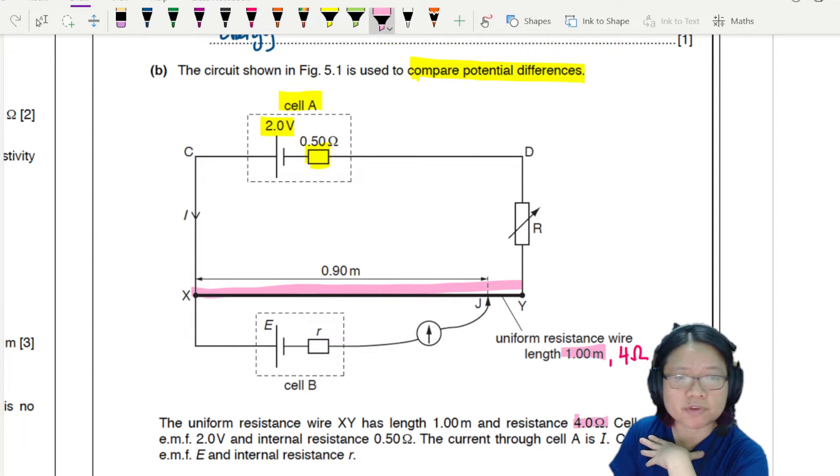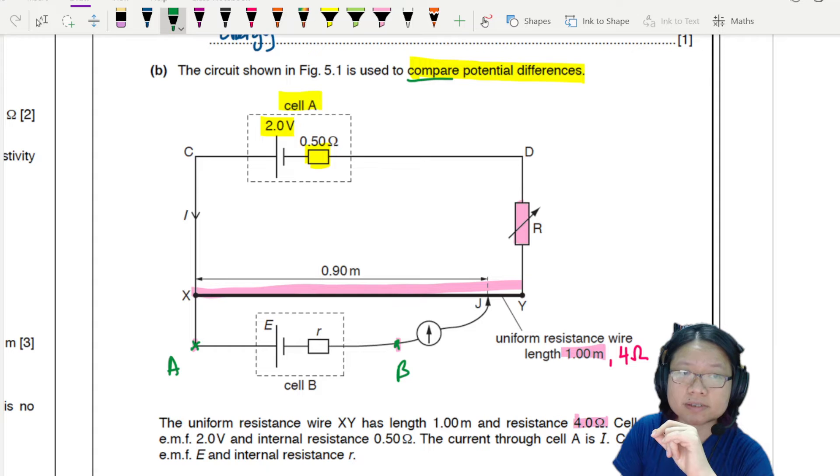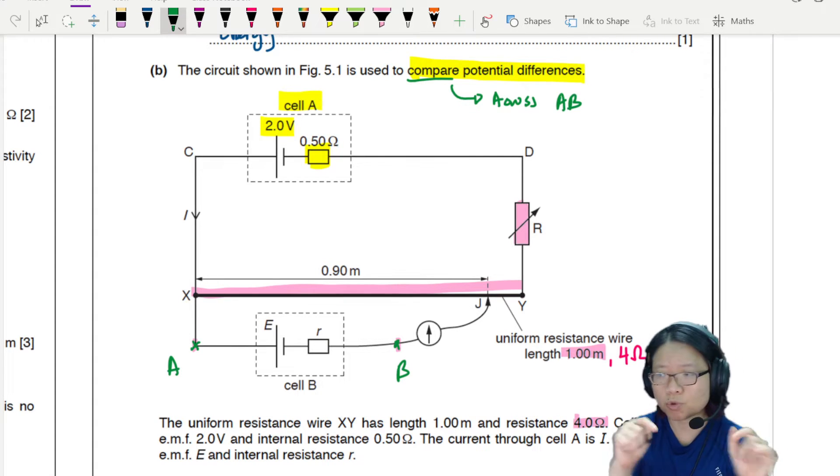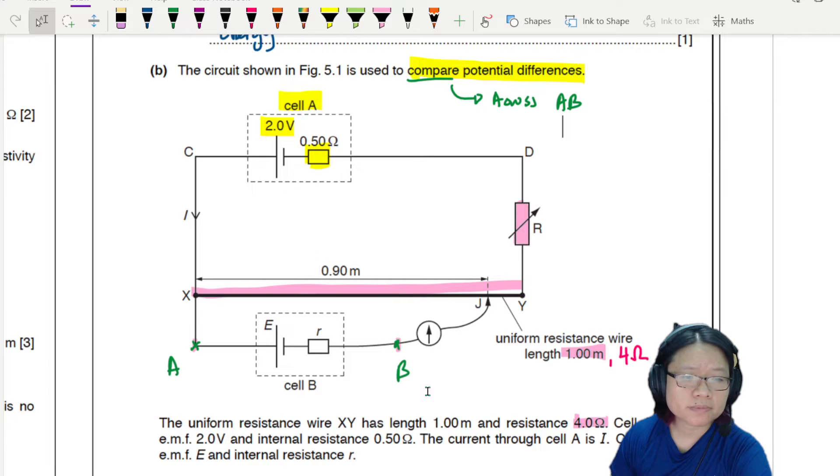And also at the same time, you have this variable resistor R, which I believe can be used to change the precision of the instrument. So basically what we're doing is we're just comparing whatever, we can connect whatever we want between these two points here, A and B. And we can compare the potential difference. And when we compare the potential difference, we can calculate it. That's what they mean by this. So to compare the potential differences across, mainly is to measure across A, B. Anyway, the current through the cell is I. It's already labeled here. And cell B has an EMF E and a resistance R.